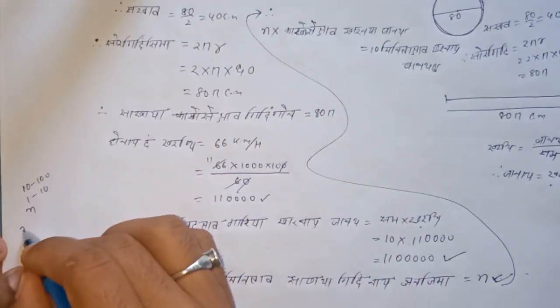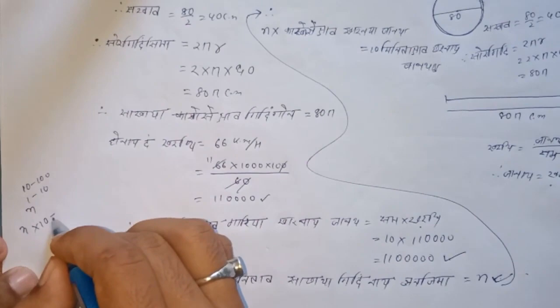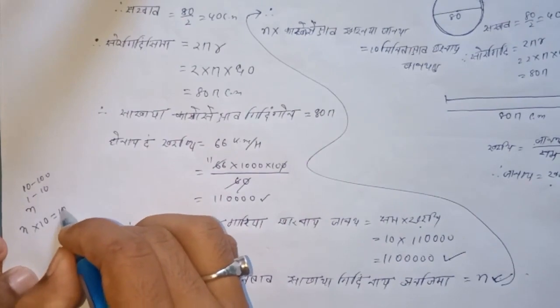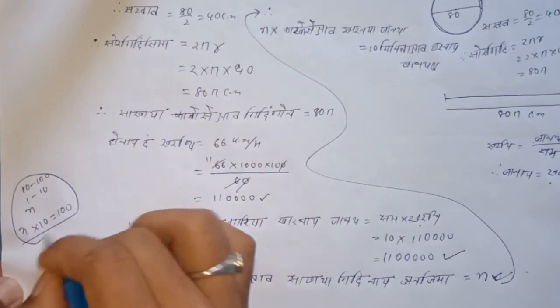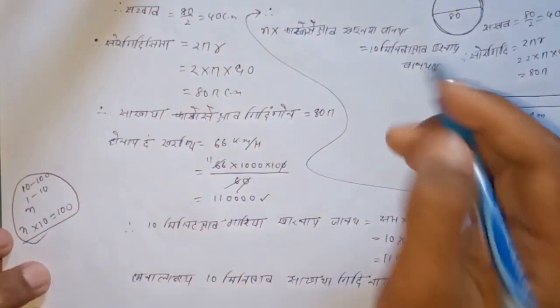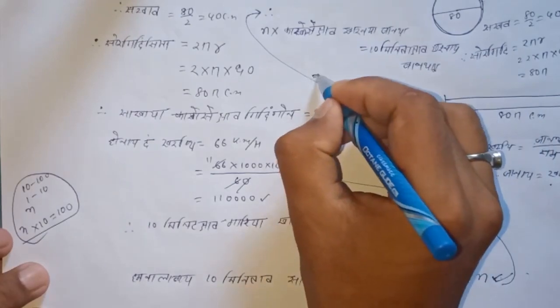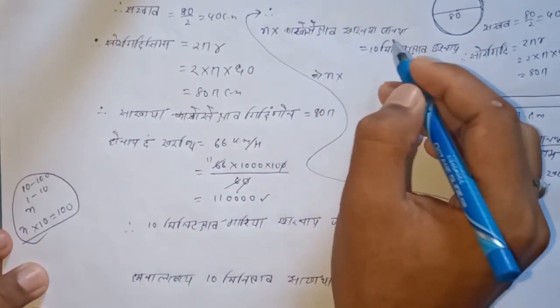n is 10, which equals 100. The two gives us 20. So this implies that n equals 10.